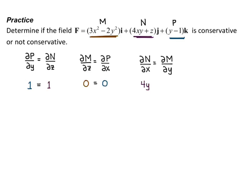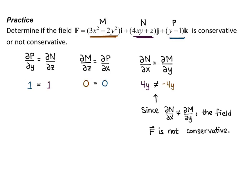Partial m partial y is going to be negative 4y — the y squared becomes 2y, and it's multiplied by a negative 2, so negative 4y. These are not equal, and because of that, since partial n partial x does not equal partial m partial y, the field capital F is not conservative, meaning there is no potential function that would have capital F as its gradient.